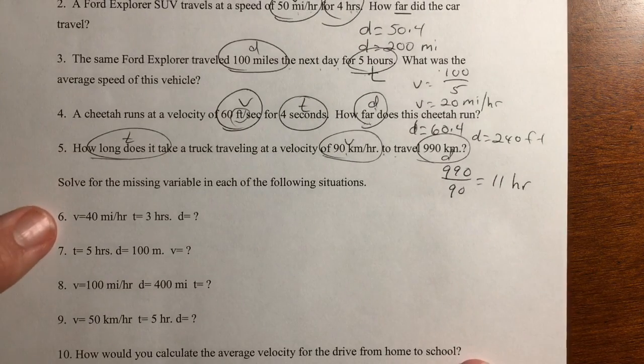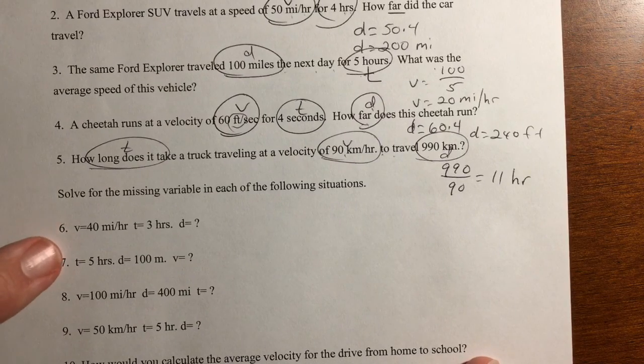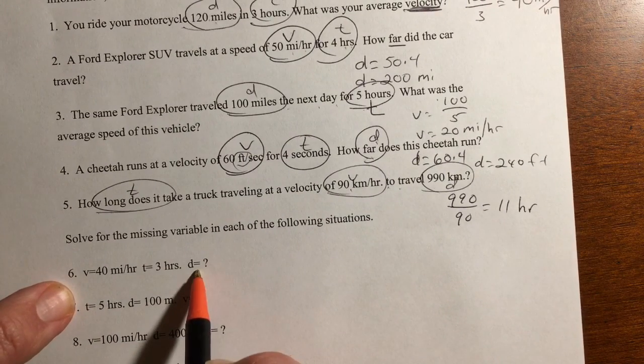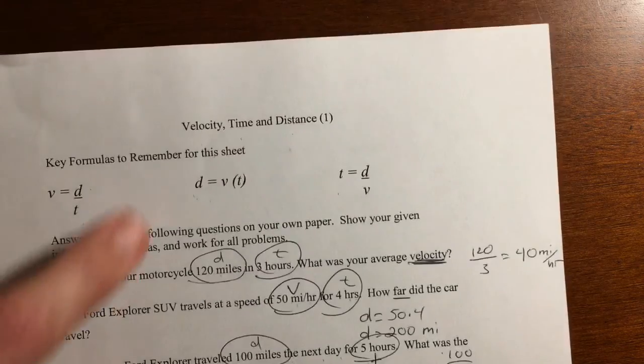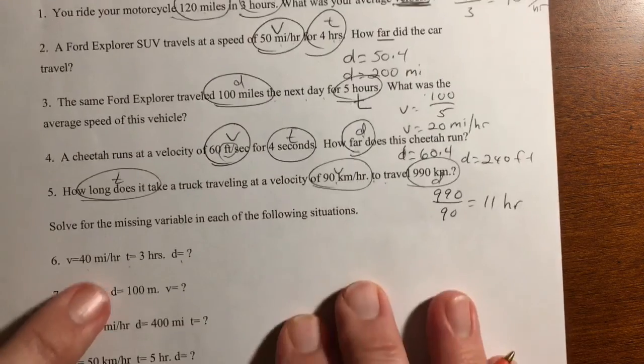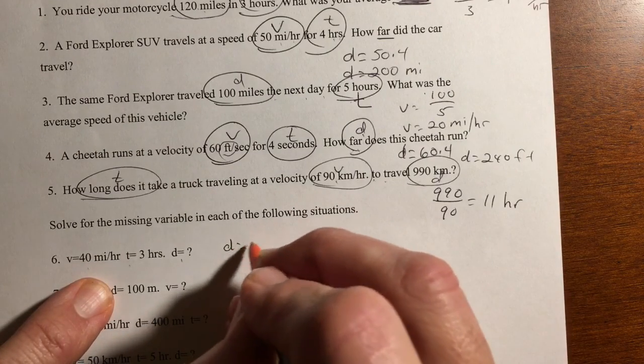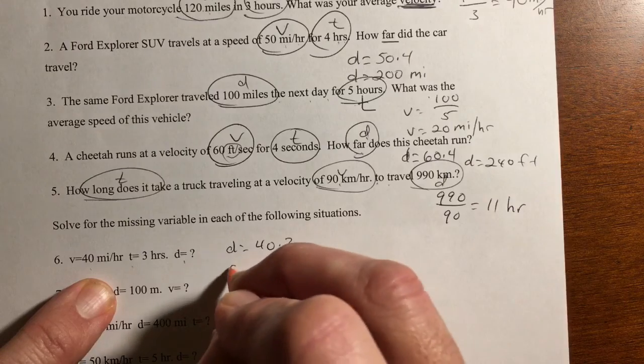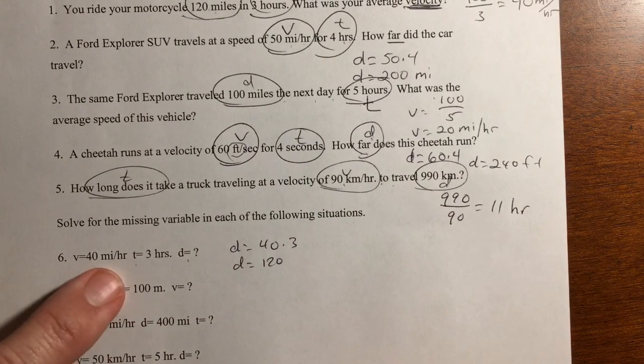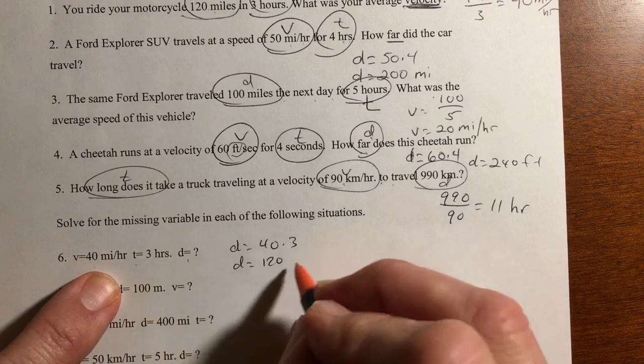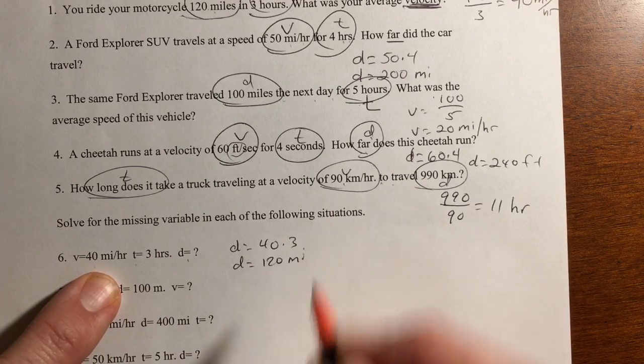All right, the rest of these just have the numbers, just plug them into the formulas. So we have, they're trying to find D with V and T. So here it is. They multiply the two numbers. So D equals 40 times three. D equals 120. Again, the units are right in here. And the times are going to cancel out. We're left with miles.